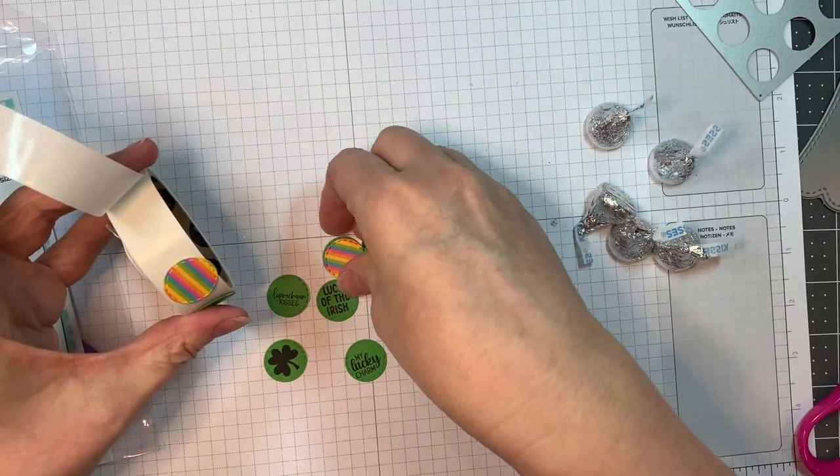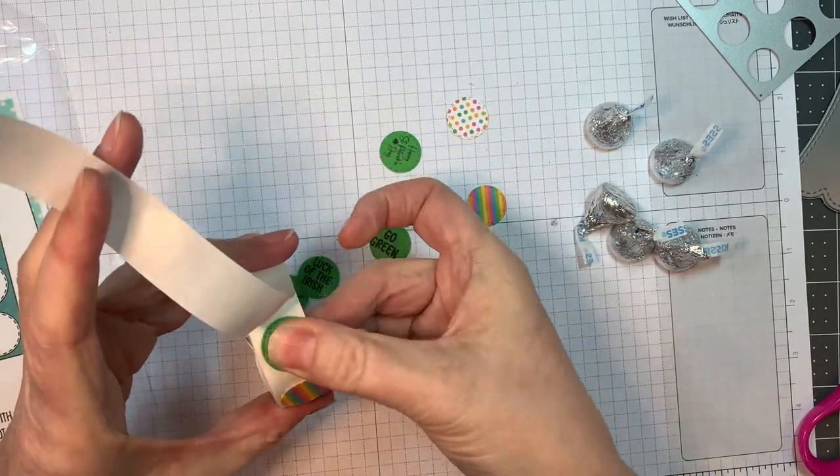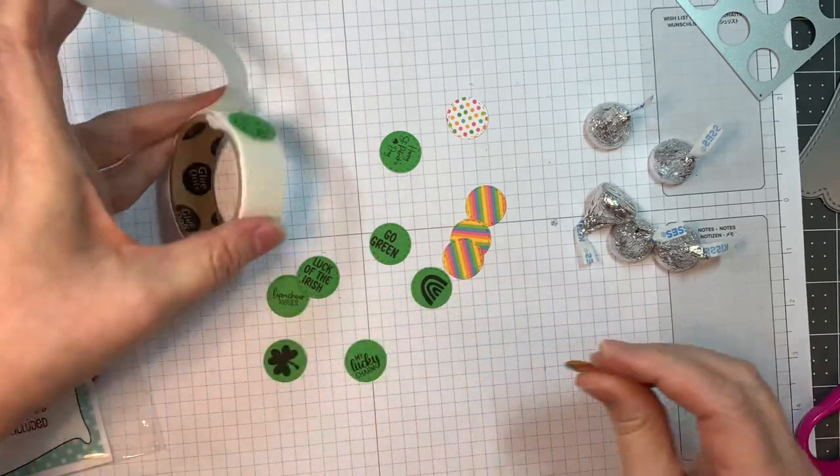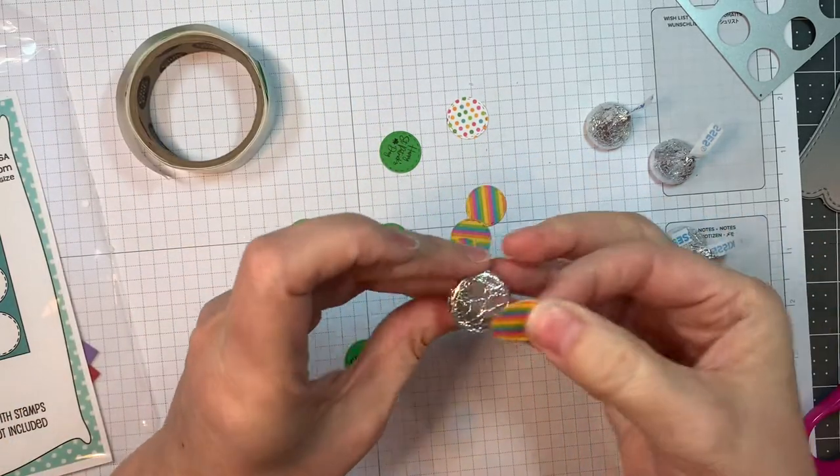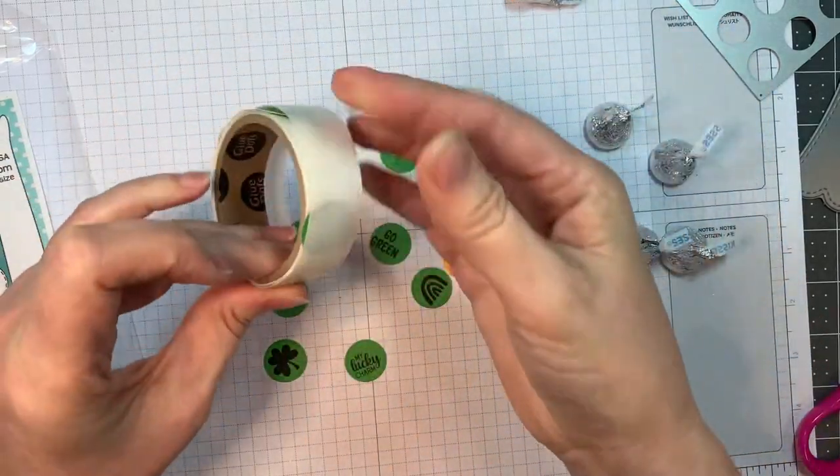These could also be put on little Hershey nuggets, on the tops of them. There are candy wrap dies that you can wrap a little Hershey nugget with first, and then decorate that with these little rounded sentiments or images.